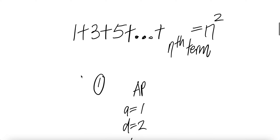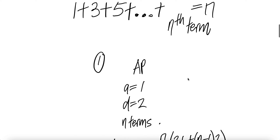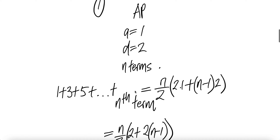Let's look at the first way. We're going to add one plus three plus five all the way to the nth term. First, notice that the first term is one, the common difference is plus two, and the number of terms you're going to add up to will be n. This is an AP, and we know the formula when we want to add an AP of n terms.